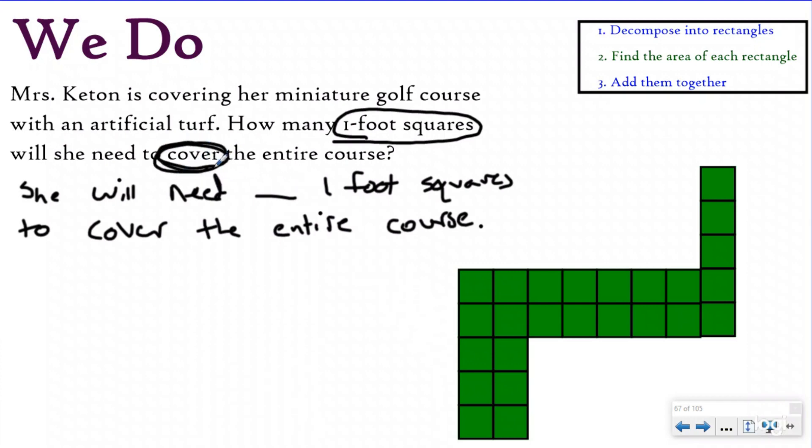So it's asking me how many one foot squares will she need to cover the entire course? Obviously cover is a key word for area because area is when we're covering things with unit squares. But anytime it's asking you for one foot squares, really this is asking you how many unit squares will she need to cover? This is another way to ask for area. Each of these is going to be one square foot. So really what it's asking you is how many unit squares am I going to need to cover? This is another way they ask you for area.